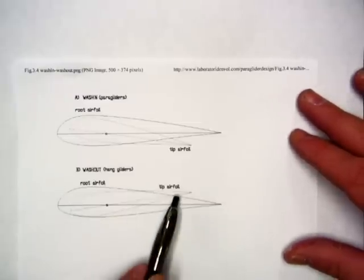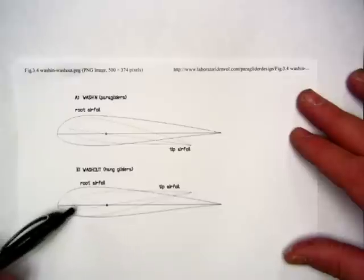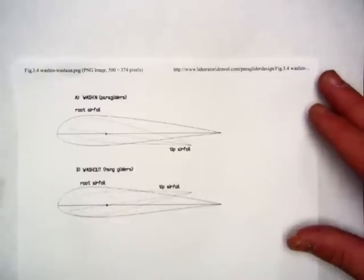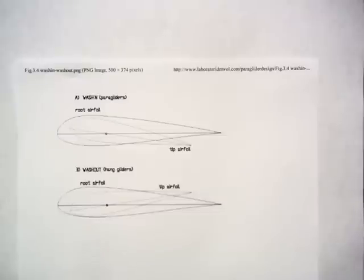That means that the tip of the wing needs to rise towards the back, causing a different angle of incidence than the root of the wing. It prevents tip stall when you're in tight corners.